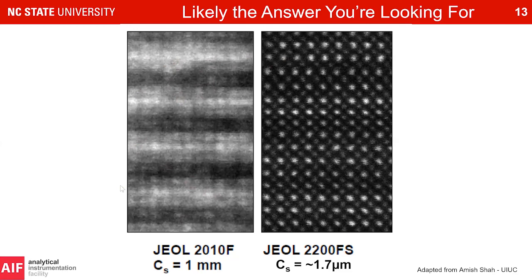Comparing an uncorrected TEM to a spherical aberration-corrected, probe-corrected system on the same material: in the uncorrected microscope, atomic columns are very blurry — the spherical aberration coefficient is on the order of millimeters. After correcting most spherical aberrations in the condenser lens, the atomic structure is clearly visible and the spherical aberration coefficient drops to microns. A dramatic drop in aberrations gives a huge rise in resolution.